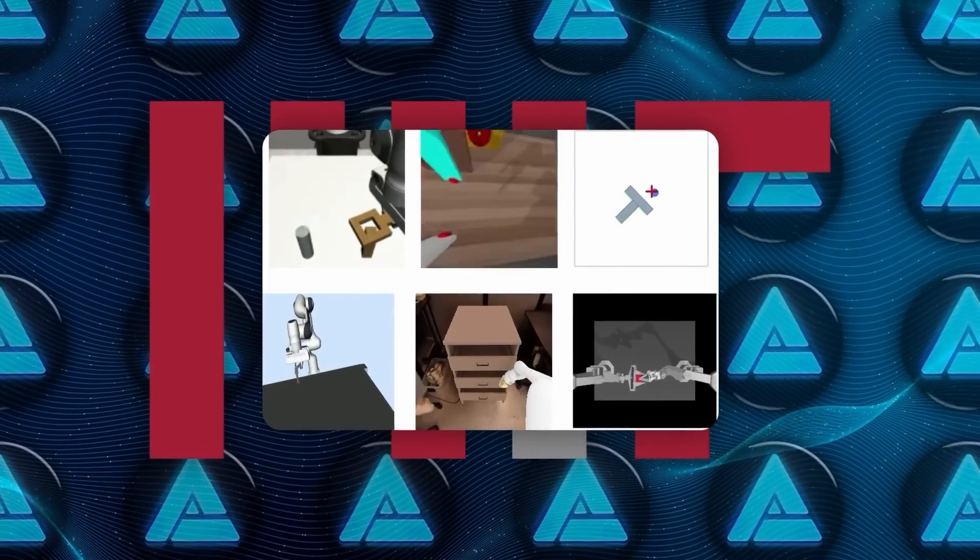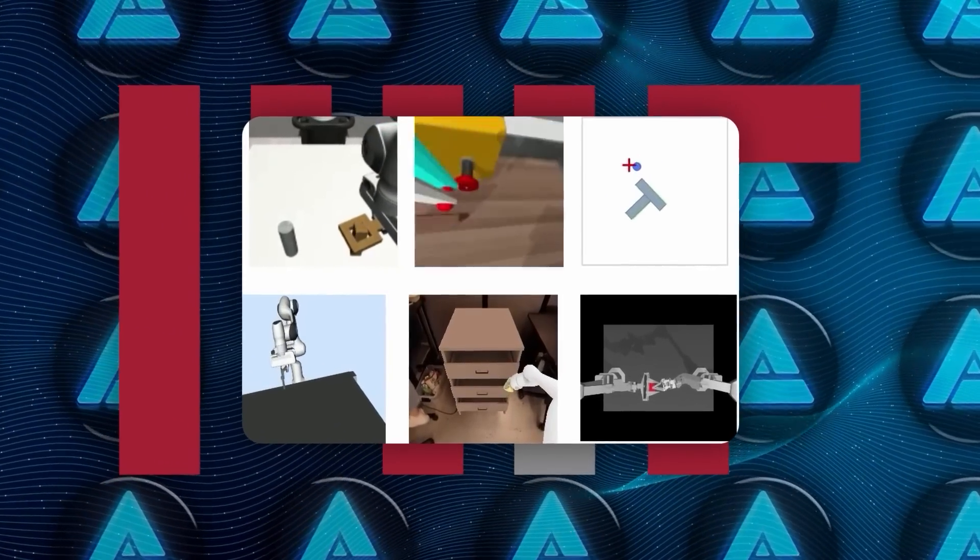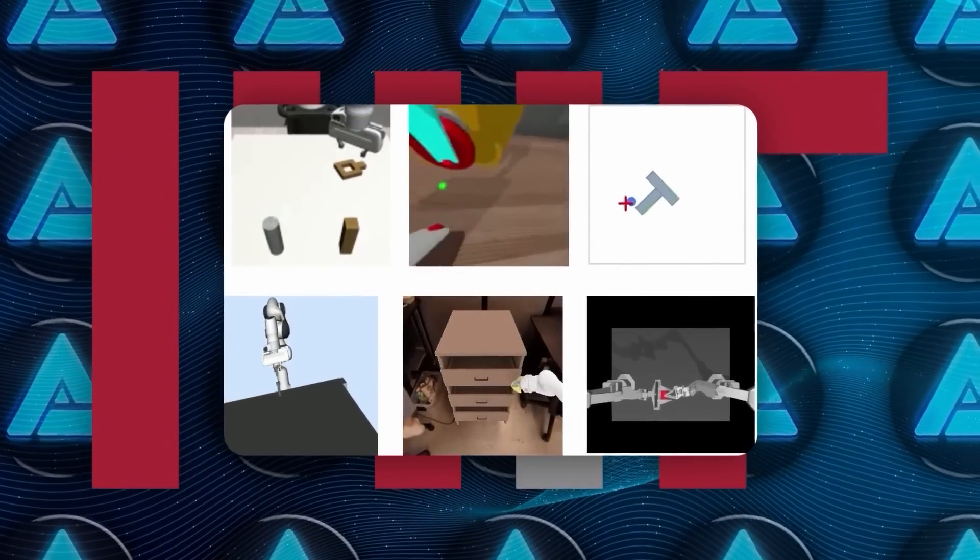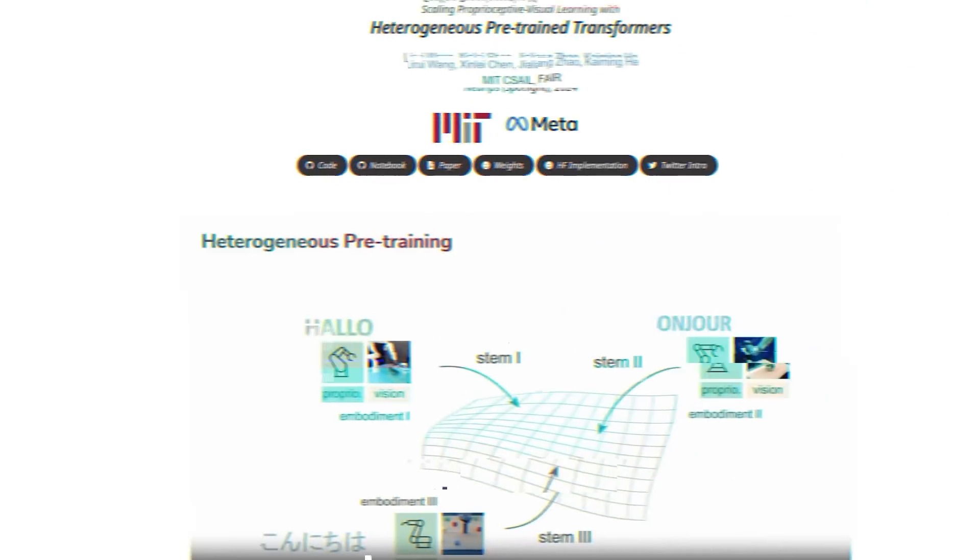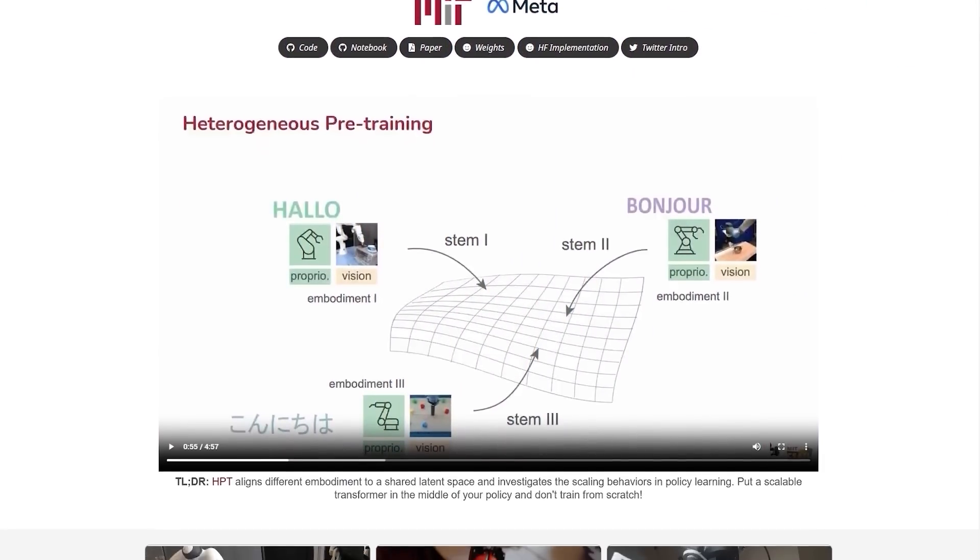Imagine a robotic arm that can help with cooking, then seamlessly switch to folding laundry and maybe even feed your dog, all without having to be retrained from scratch for each new job. And this HPT model could be a big step toward making that happen.